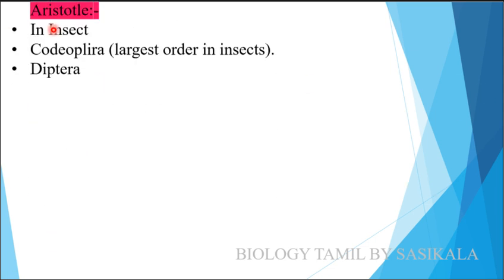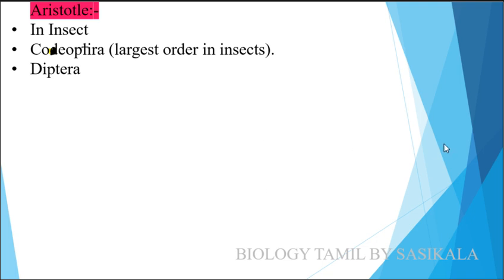Aristotle classified animals into two groups. Coleoptera is the largest order of insects. Aristotle classified animals into two categories based on the presence or absence of blood. Why did they classify into two animals? Based on whether they have blood or not.